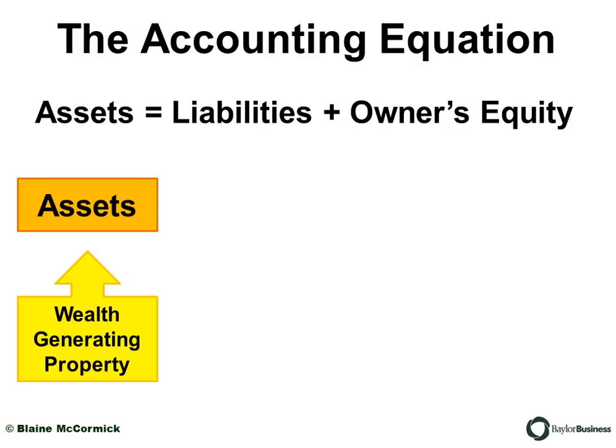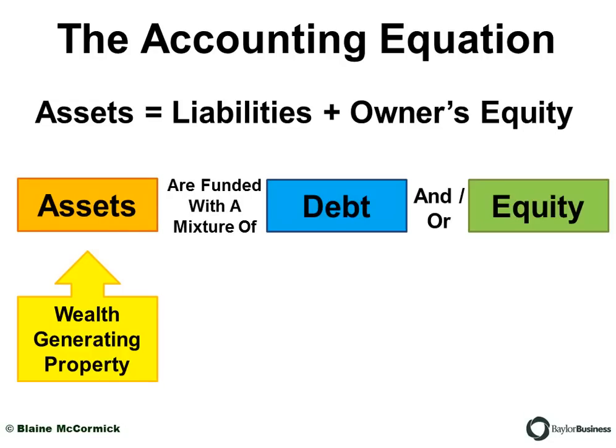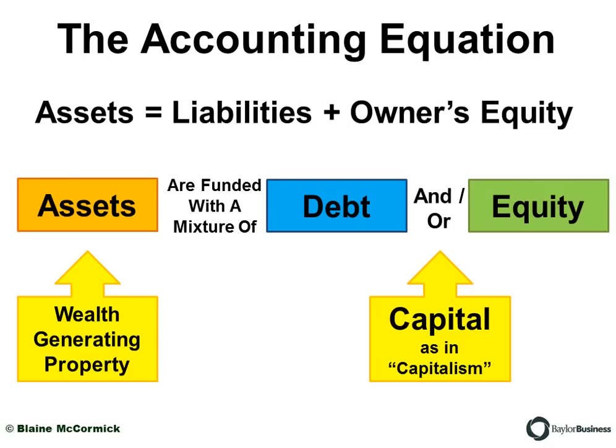Assets are your wealth-generating property — that's why you have assets, so you can generate wealth over the long term. But your assets are funded with a mixture of debt and/or equity. You have something and you bought it with some money, and that's what the equation means. We call debt and/or equity "capital," as in capitalism.